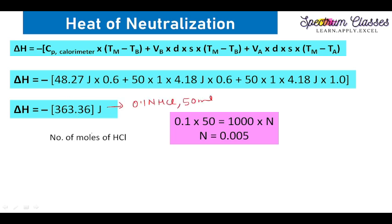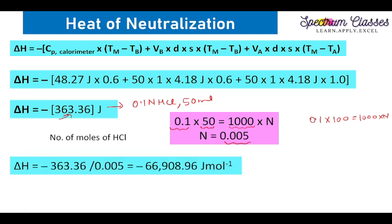On solving these values, we get a certain amount of heat evolved in this process. This heat is for 50 ml of 0.1 normal HCl taken. But we need to calculate heat in joules per mole, so we divide by the number of moles. To calculate moles: n = 0.1 normal × 50 ml, converted to moles per liter. If 100 ml had been taken, you would adjust accordingly.